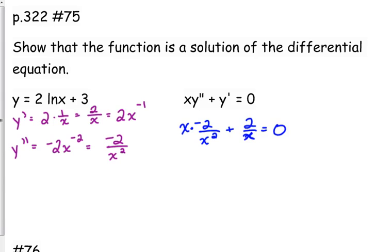So when we go over to the differential equation, we have x times our second derivative, negative 2 over x squared, plus our first derivative, 2 over x. When we simplify that first one, the x over x squared simplifies to 1 over x, and we have negative 2 over x plus 2 over x, which is 0. So we verified that it is the solution to that differential equation. That's really all you have to do for this.